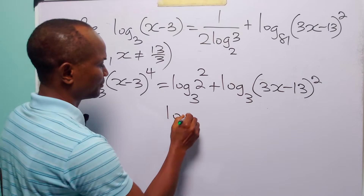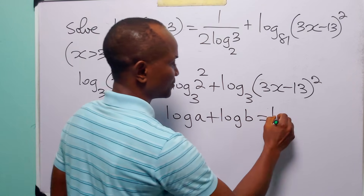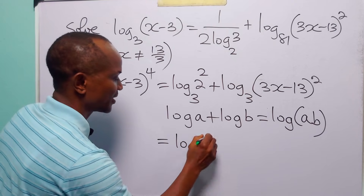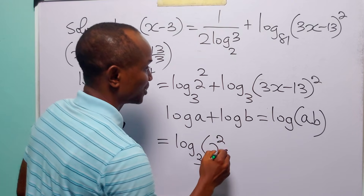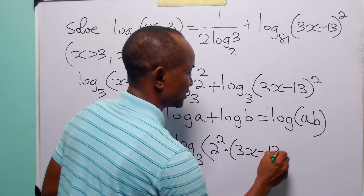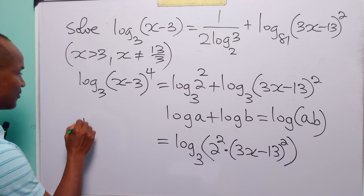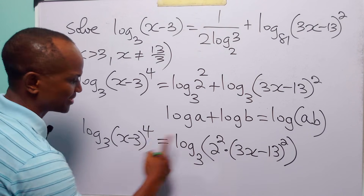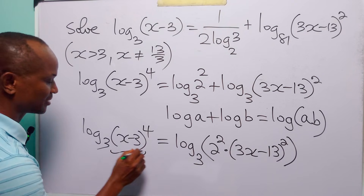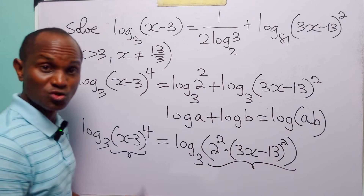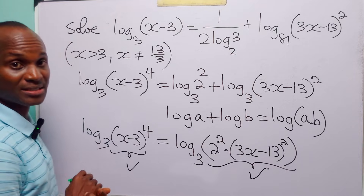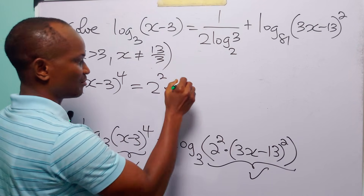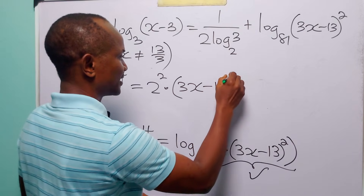And of course, using the rule that log a plus log b equals log of a times b, we can write the right-hand side as log base 3 of 2 squared multiplied by 3x minus 13 squared. Since we have log base 3 of the same expression on both sides, we can set the arguments equal: x minus 3 to the power 4 equals 2 squared times 3x minus 13 squared.